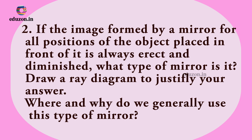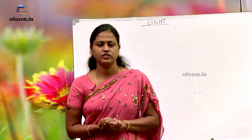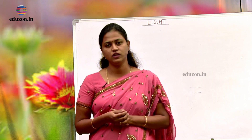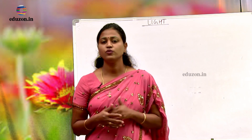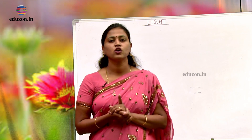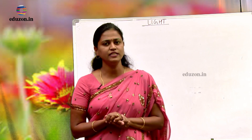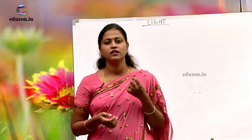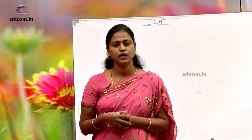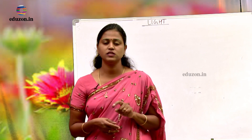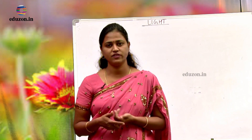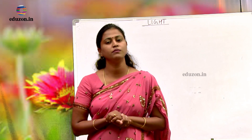If the image formed by a mirror for all positions of the object placed in front of it is always erect and diminished, what type of mirror is it? The answer is: the image is erect and also diminished. We find such an image in convex mirrors. Where do we usually find these convex mirrors? We see convex mirrors as rear-view mirrors in vehicles, because the image is erect and diminished, helping the driver to have a larger view of the traffic behind the vehicle.